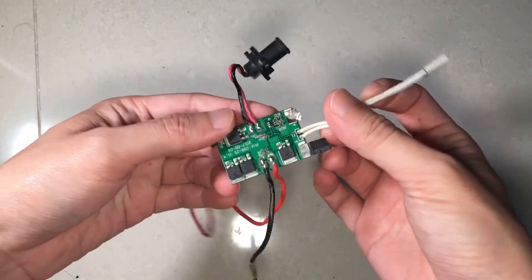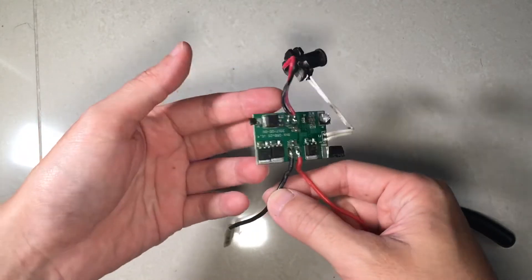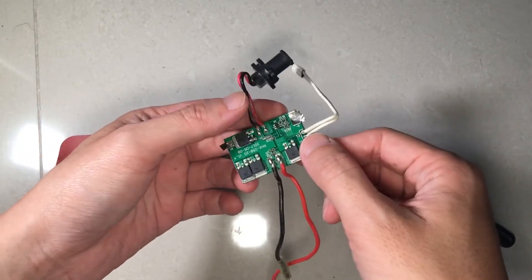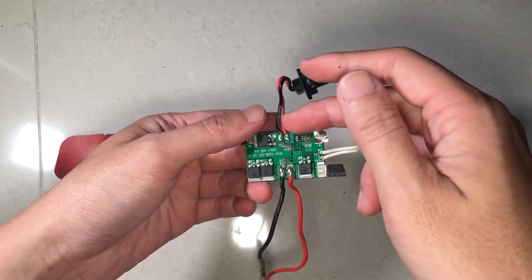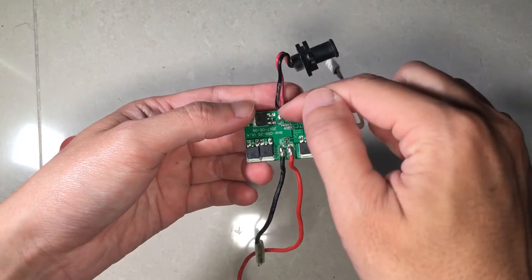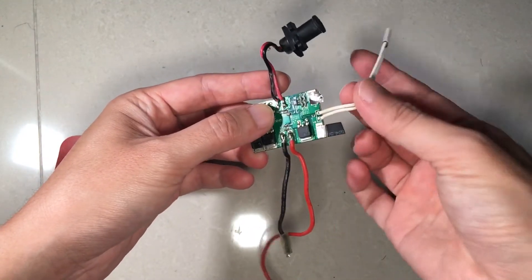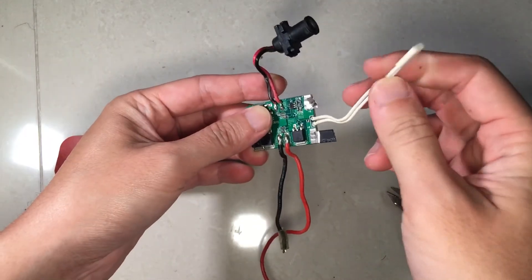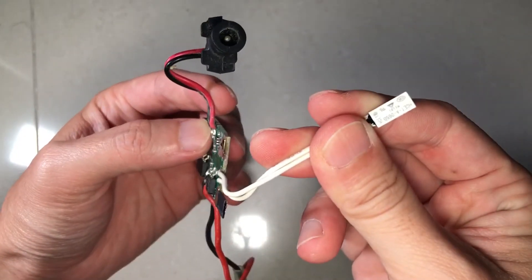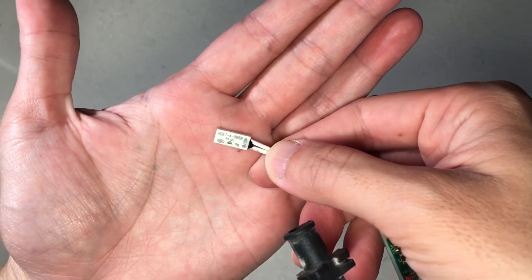And this is how a typical battery control board or battery management board looks like. So it usually has two points for charging and two points for output, and we also see something to measure the temperature.